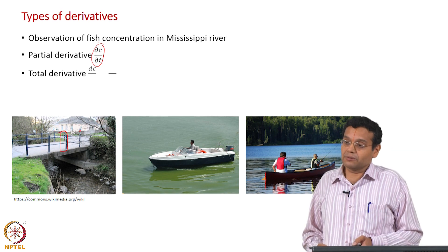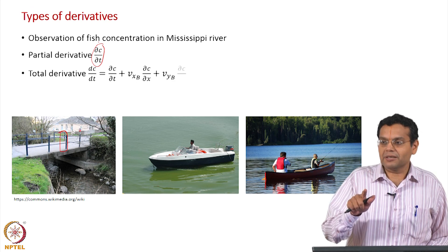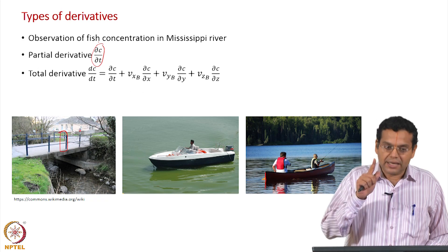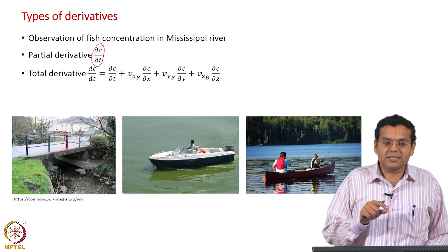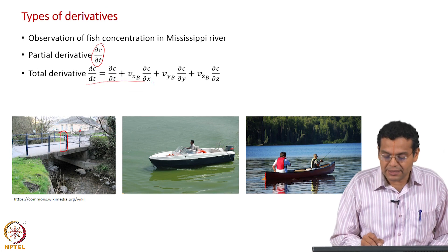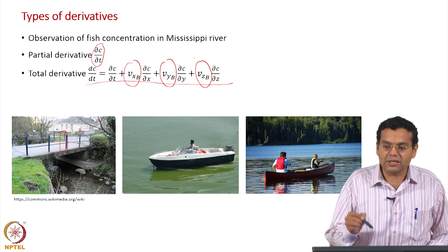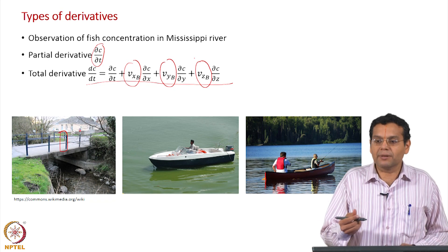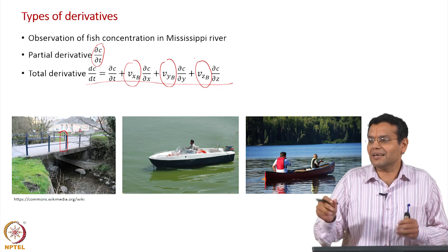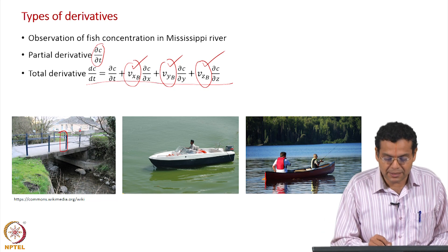The next derivative is the total derivative. When we derived the expression for the substantial derivative, we said it is also a total derivative — Dc/Dt is a total derivative where the velocity is the fluid velocity. In general, the total derivative is given by the same expression, but here the velocity is not necessarily the fluid velocity. In the example of measuring pollutant on a road while traveling on a bike, the velocity of the bike is substituted. In this particular case, you substitute the velocity of the boat, which is why the subscript says 'b'.